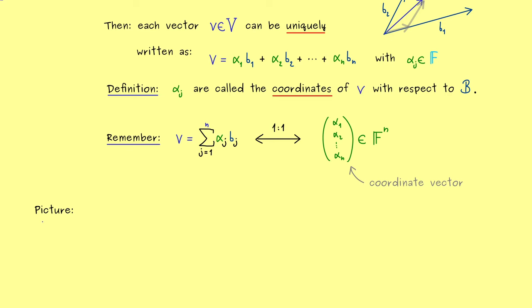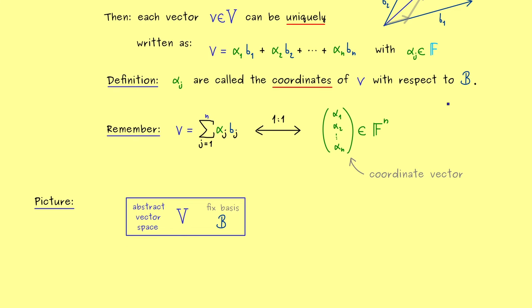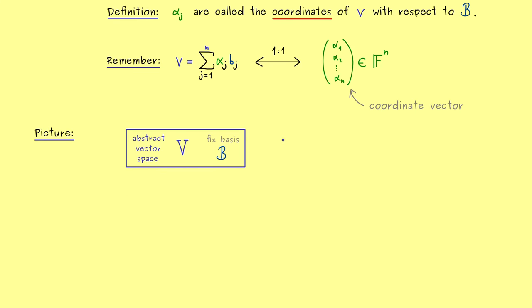Hence let's sketch our general abstract vector space V here. And now we have learned the important thing is that we also fix a basis B inside V. In fact this whole one to one translation here only works because we fixed the basis B at the beginning. And then we are able to go to the lower level to the concrete level of Fn. I call this the concrete vector space Fn simply because we already know that very well from the last course.